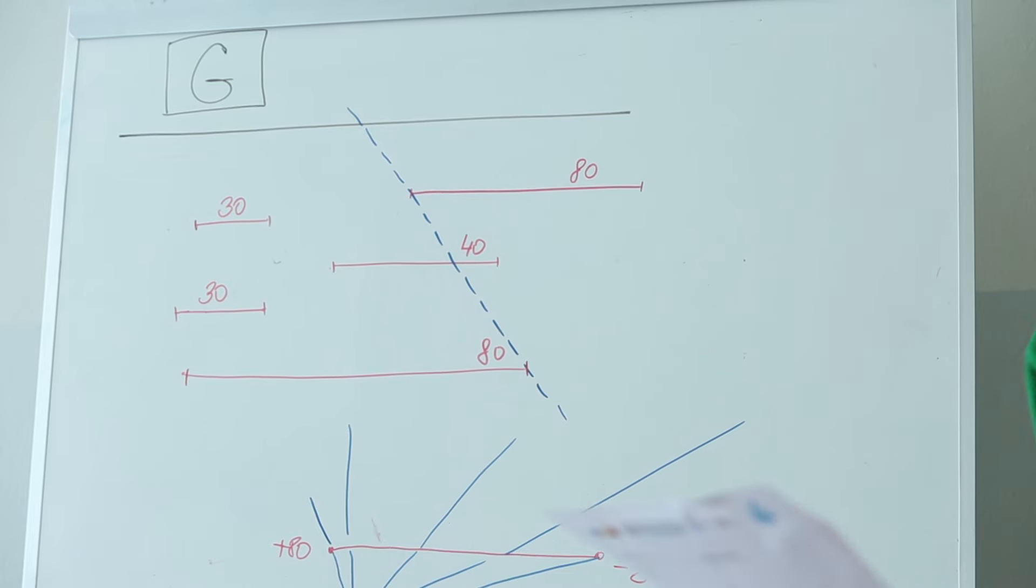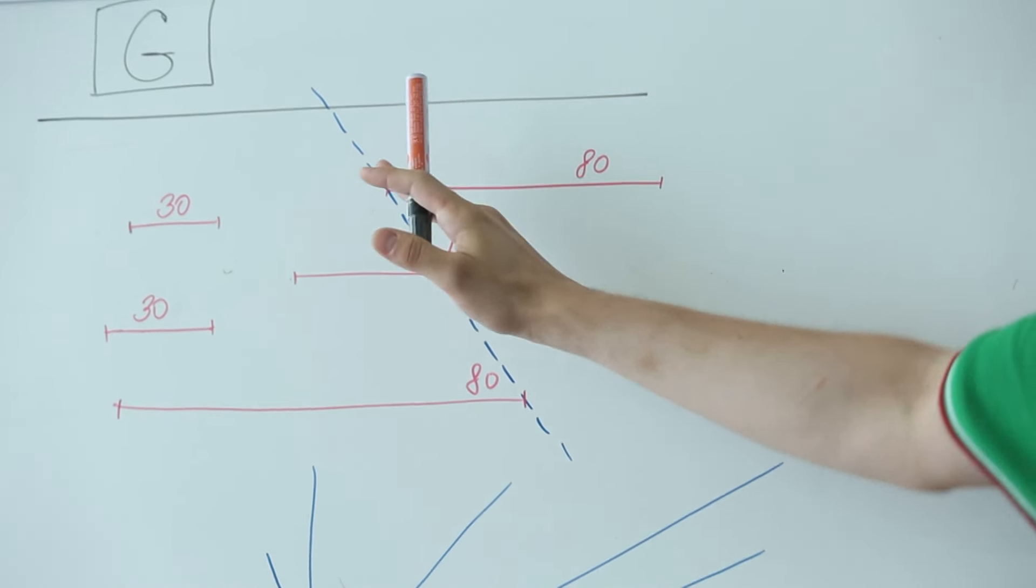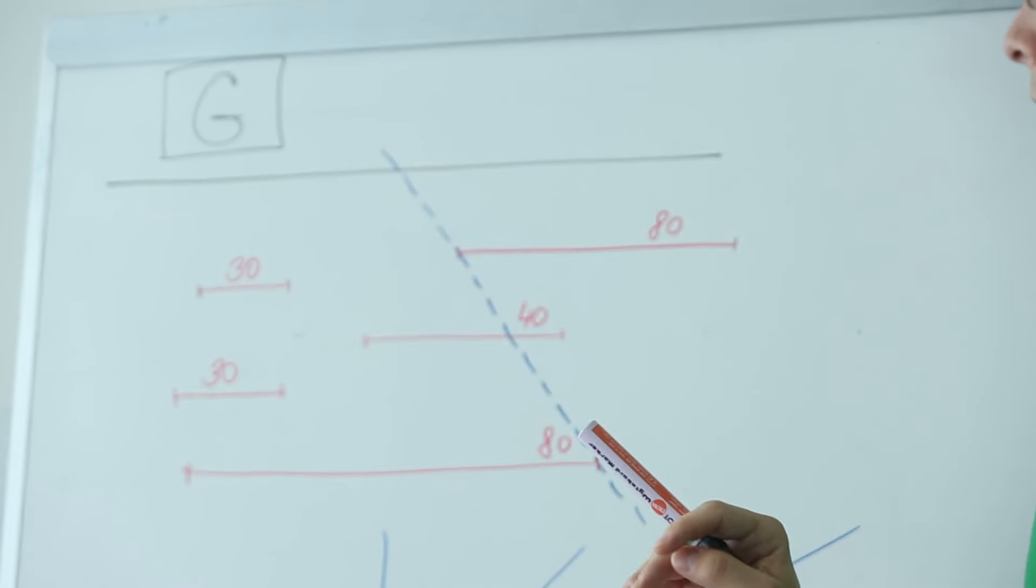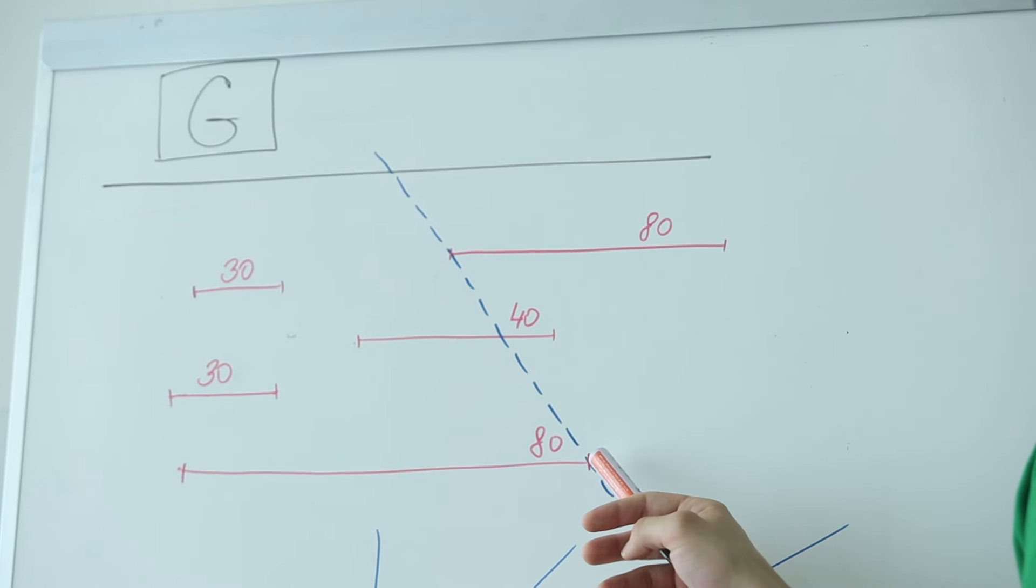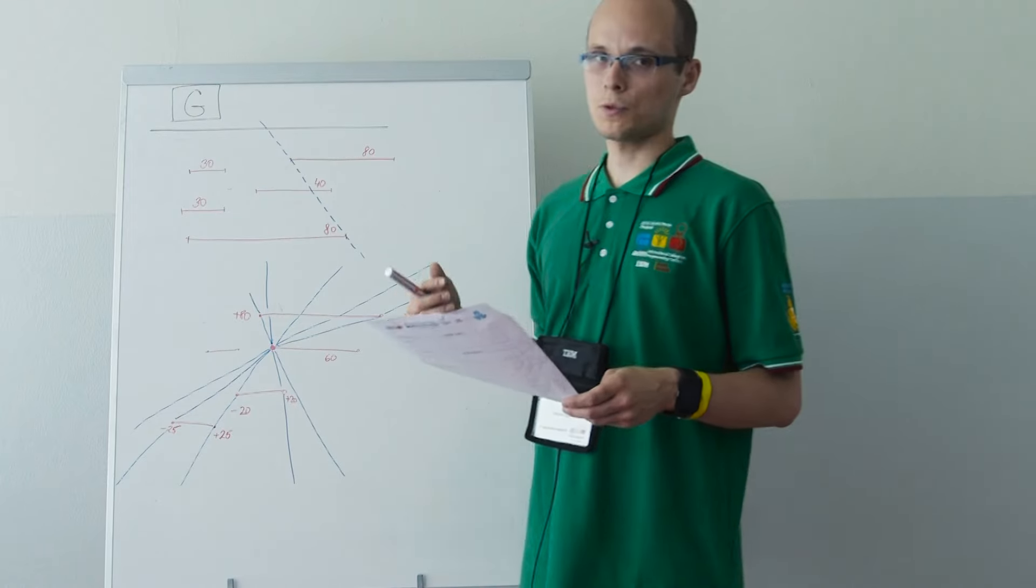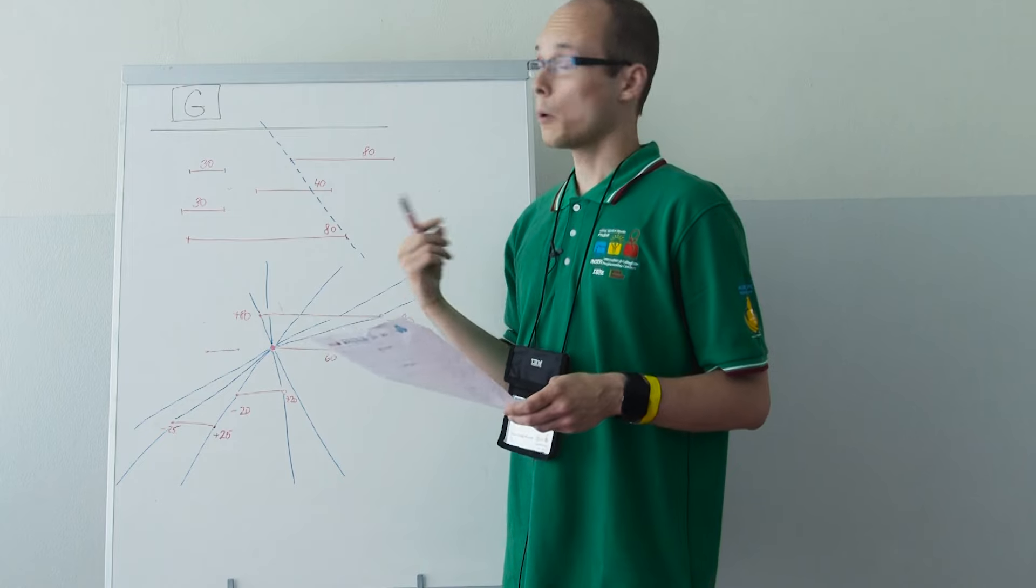First there is a key observation that we can make, and that is that every solution that we have we can rotate in a way that it goes through at least two endpoints of a deposit, except for wells that are going through only one of them.